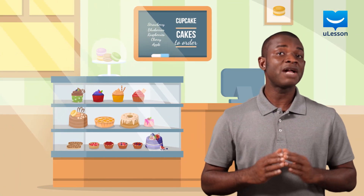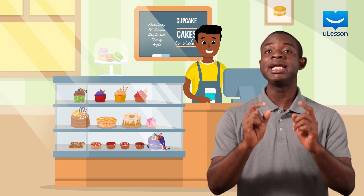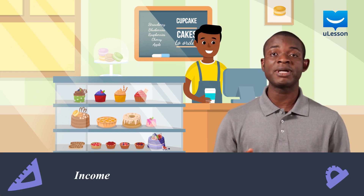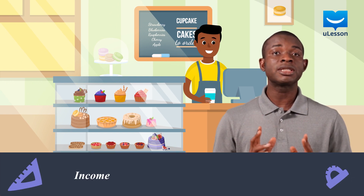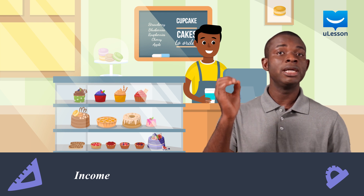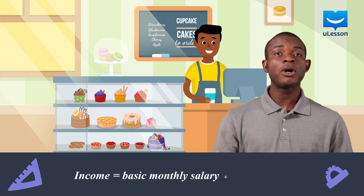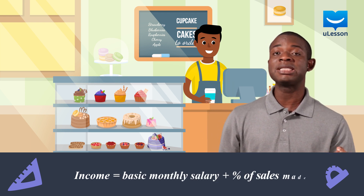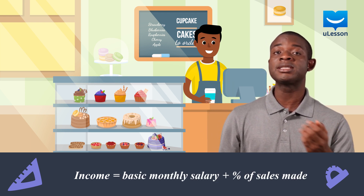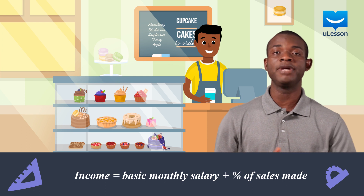Partial variation is seen at play in calculating the income of a salesperson, which is equal to the basic monthly income plus a certain percentage of the sales he or she makes.